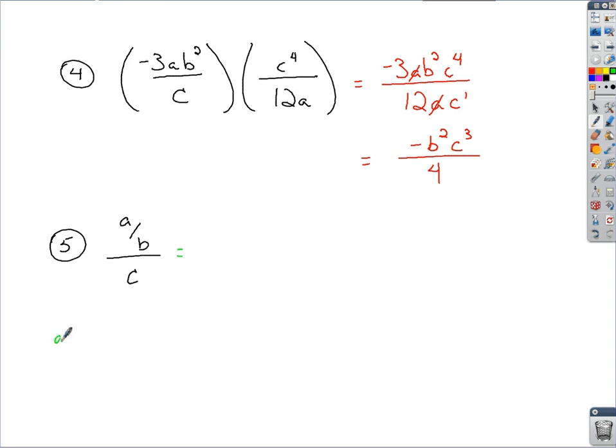Like we just talked about on number 4. Multiply numerators, multiply denominators, cancel from there. Whenever you're dividing, so I've got a over b divided by c over d.